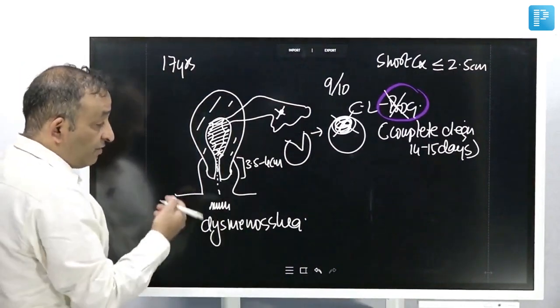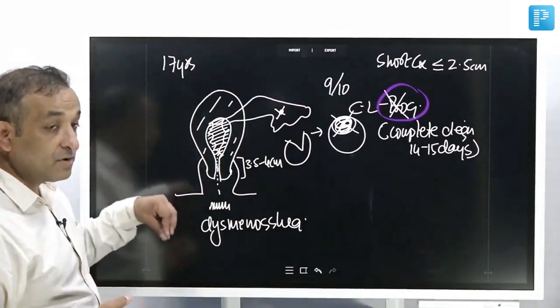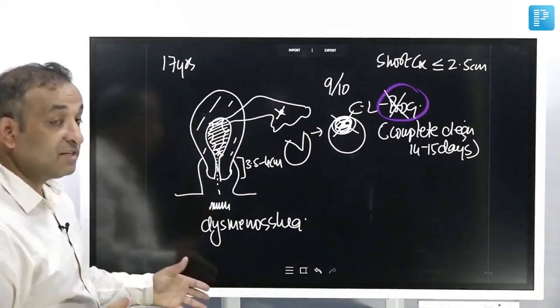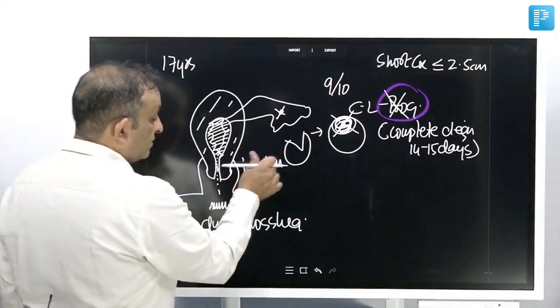So, long cervix of a young woman will take a lot of contractions to open up the cervix and it will be associated with a lot of pain. So, that is the cause of the dysmenorrhea.